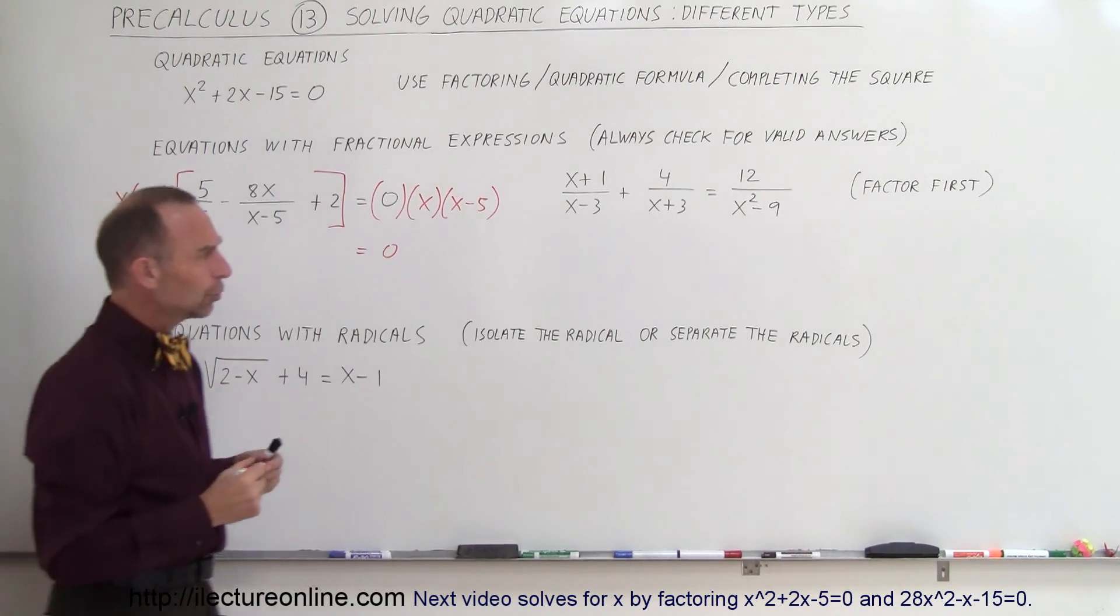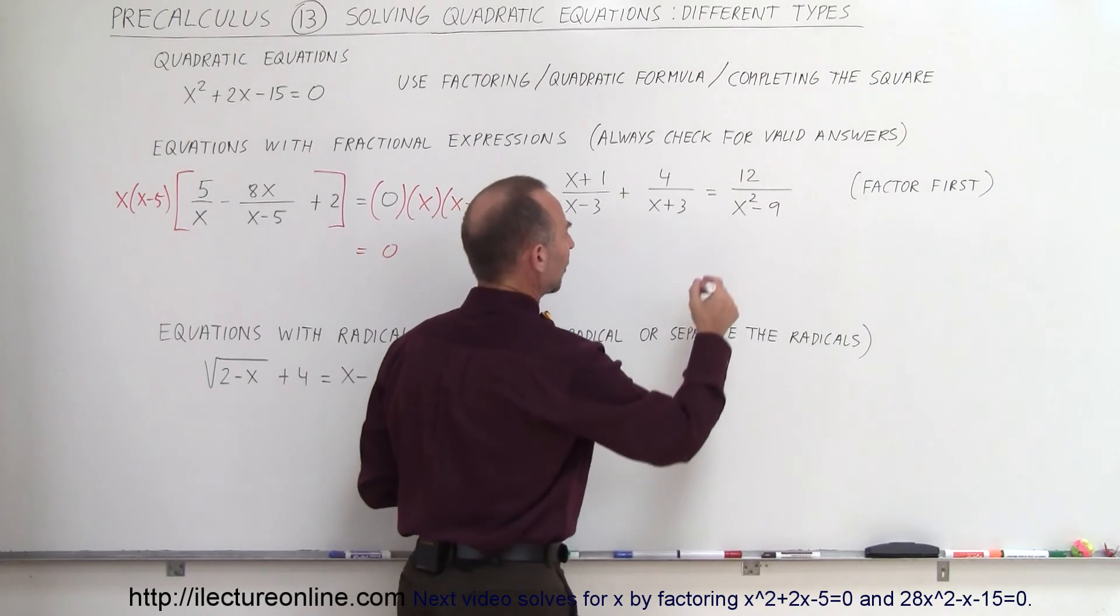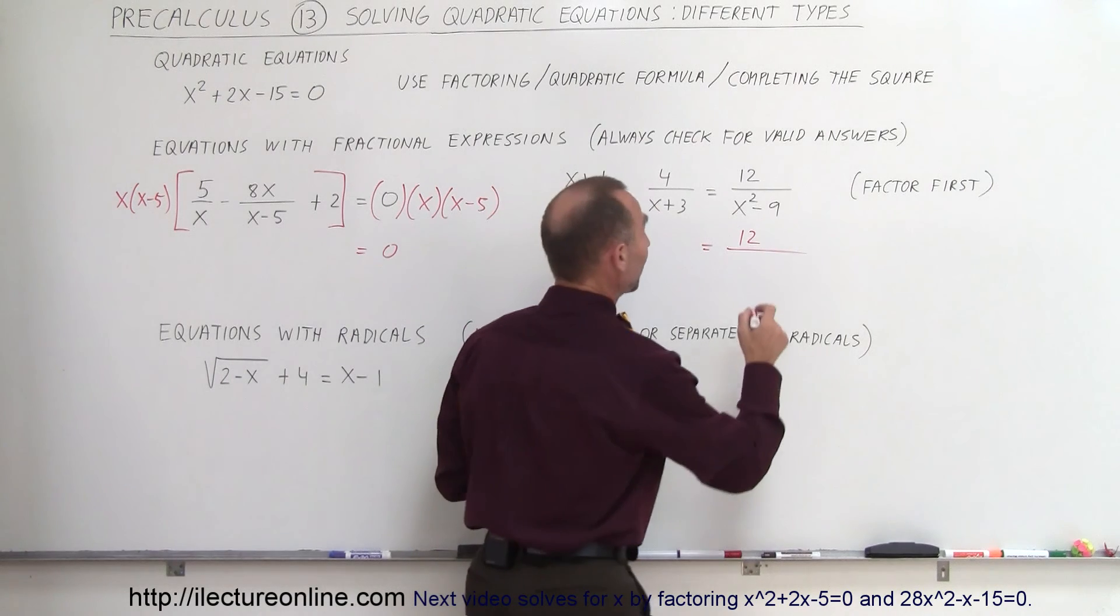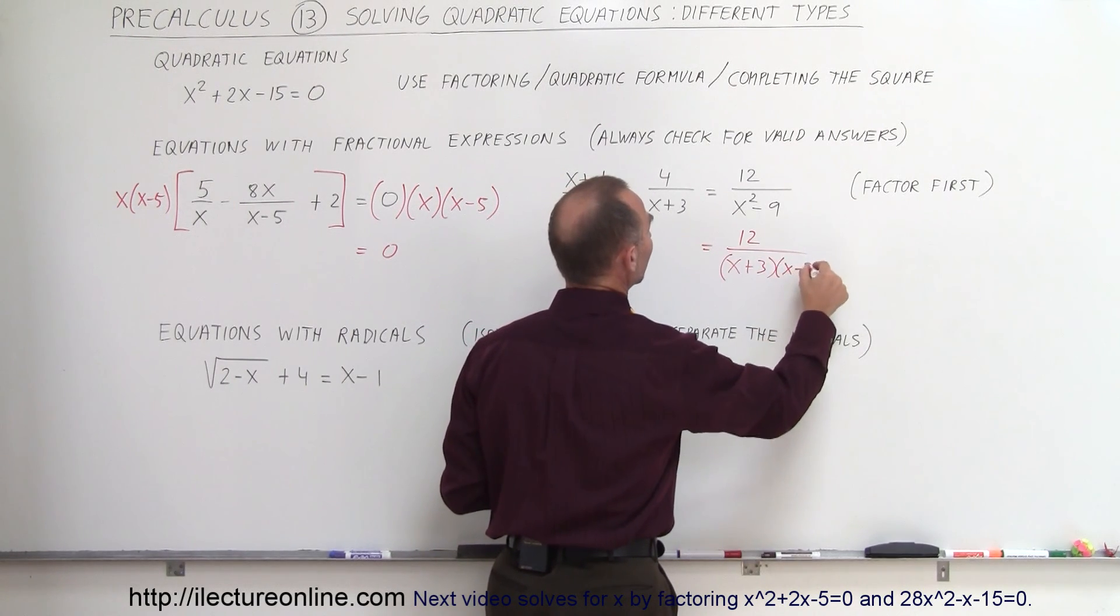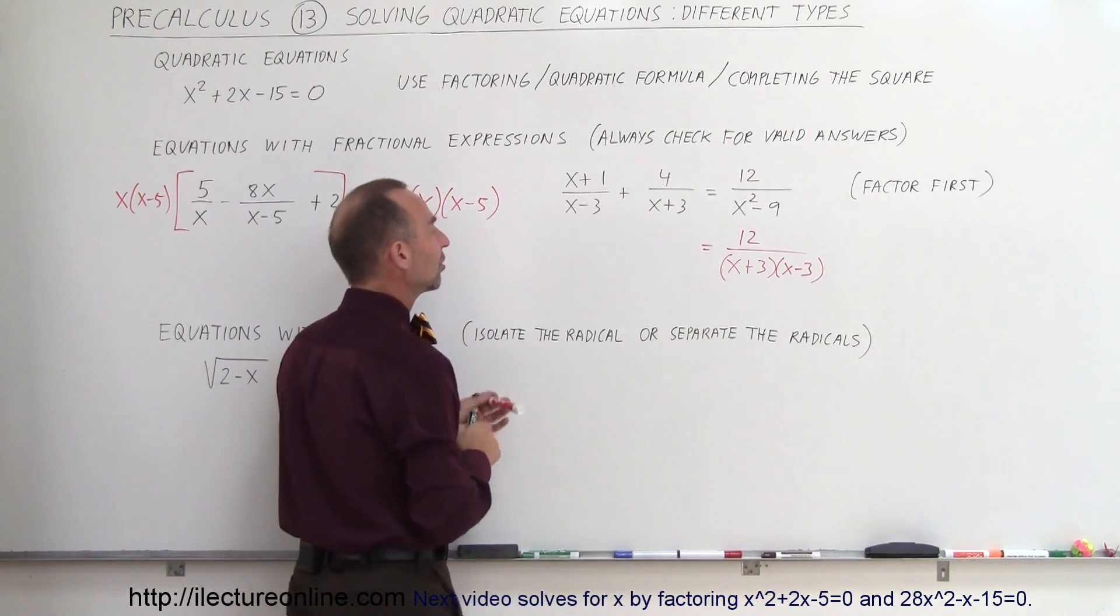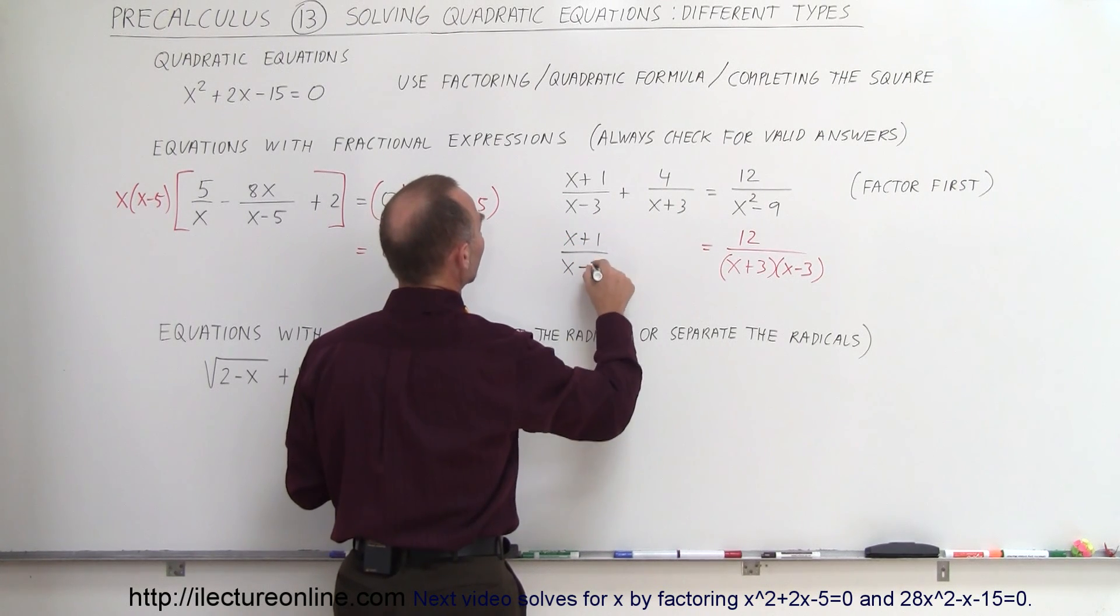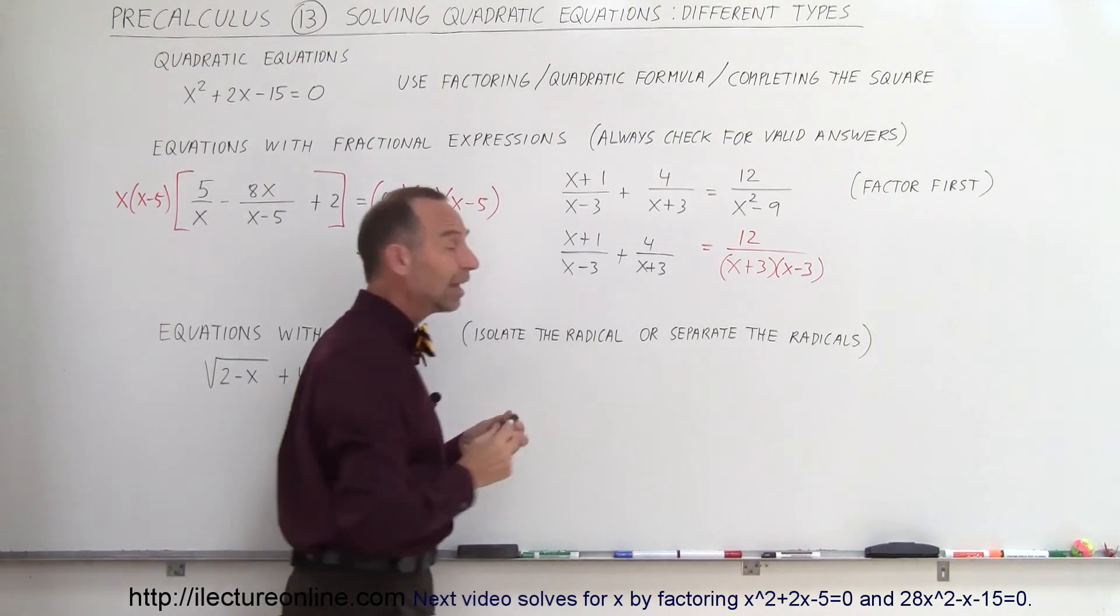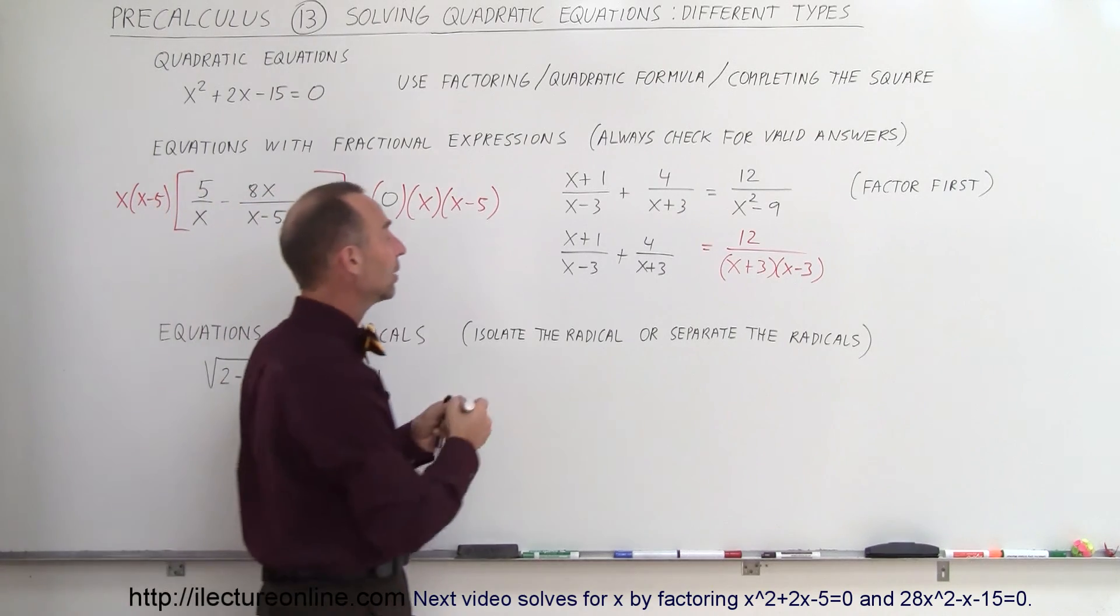In a case like this, what you may want to do first is factor this denominator right here and see what it looks like. So on the right side, this is equal to 12 divided by, since it's the difference of squares, this factors into x plus 3 times x minus 3. And then you realize, wow, those are the same two denominators that I have here in a separate format. So here, this looks like x plus 1 times x minus 3 plus 4 over x plus 3. And so what you end up doing in this case is, again, multiplying both sides of the equation by the lowest common denominator.